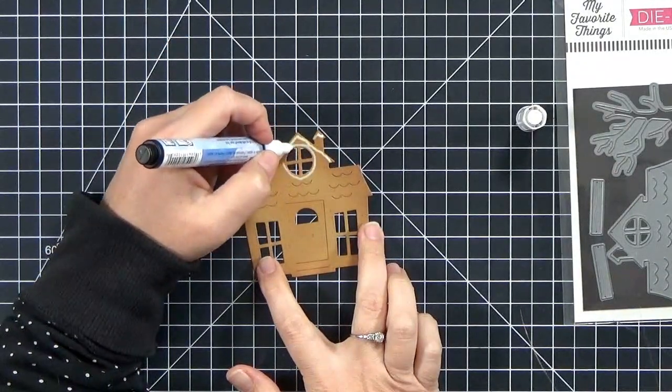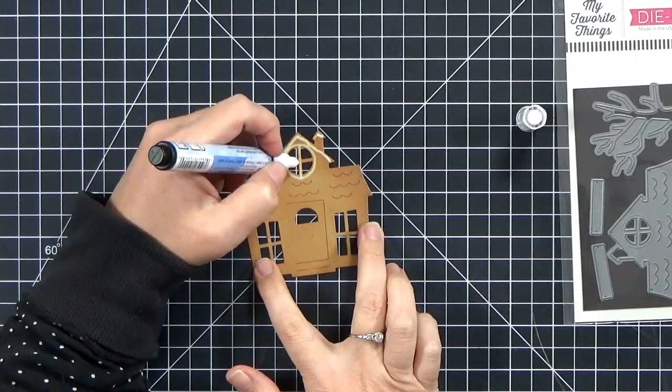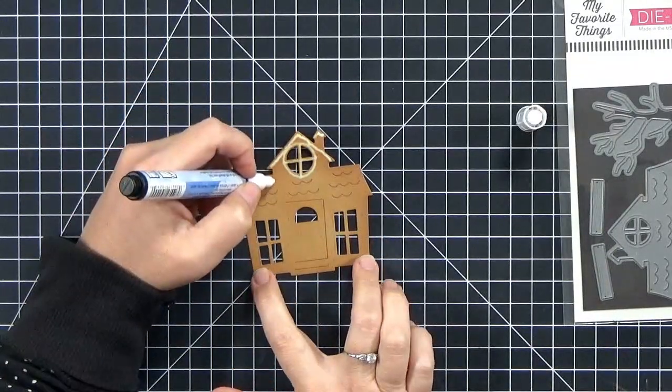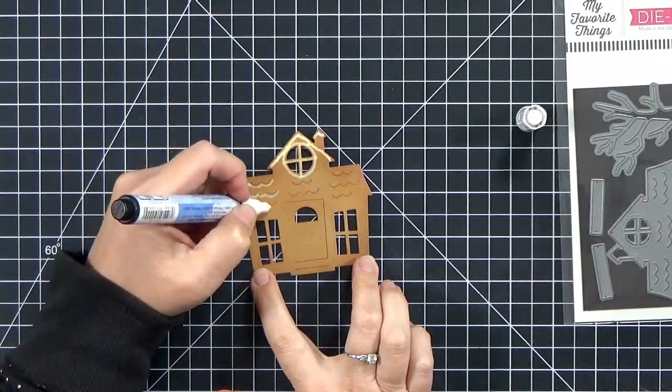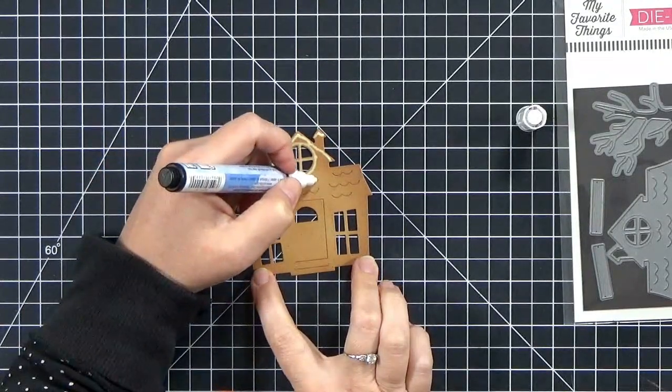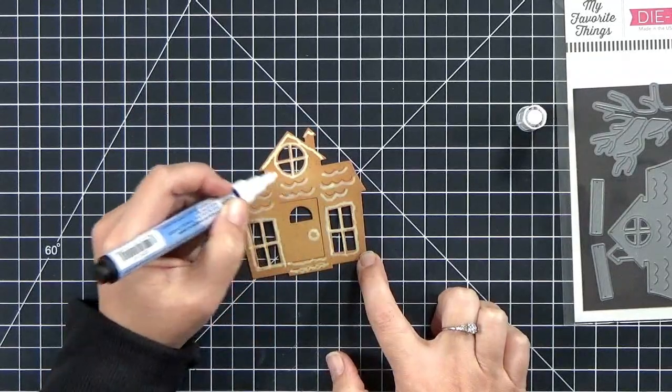I will outline all of my windows and the upper edges there, any of the details, and I'm trying to work quickly because I want to heat the snow marker while it's still wet.